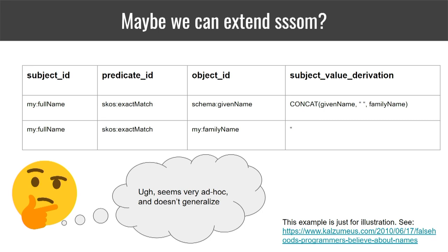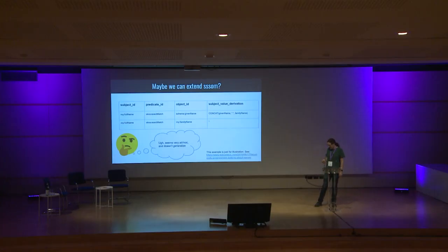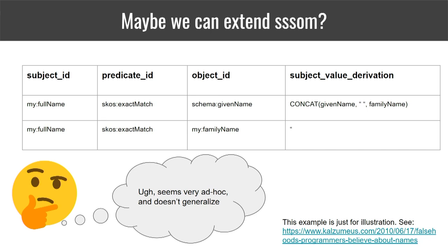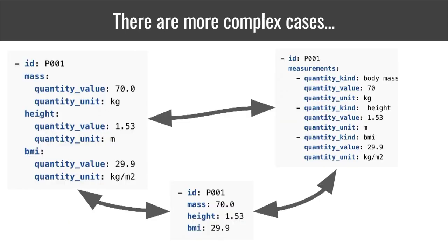Maybe it's tempting to think that in cases where names can be broken into sub-names, we could just overload SESM by adding an extra field. We might add something like 'subject value derivation' and give it an expression — maybe reusing a language like SPARQL to provide an expression that could be evaluated in a standard way. But it feels a little bit ad hoc, and it doesn't really seem like it will generalize to other use cases. There are many other things you might want to do — for example, mapping between clinical data models.